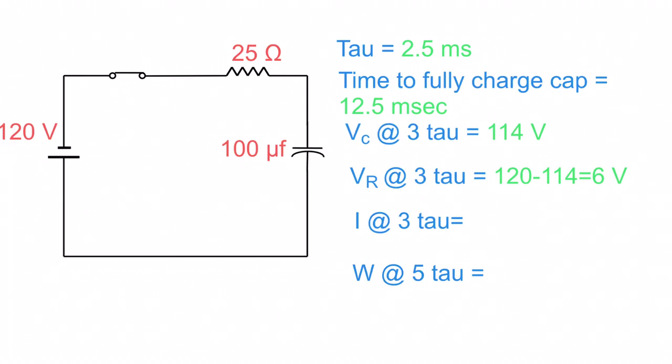Now let's talk about the current. We can't work out the current when it's across the capacitor. That won't work out for us. But we can work out the current across the resistor, because we have a voltage on the resistor, which is 6 volts, and we have a resistance at the resistor, which is 25 volts.